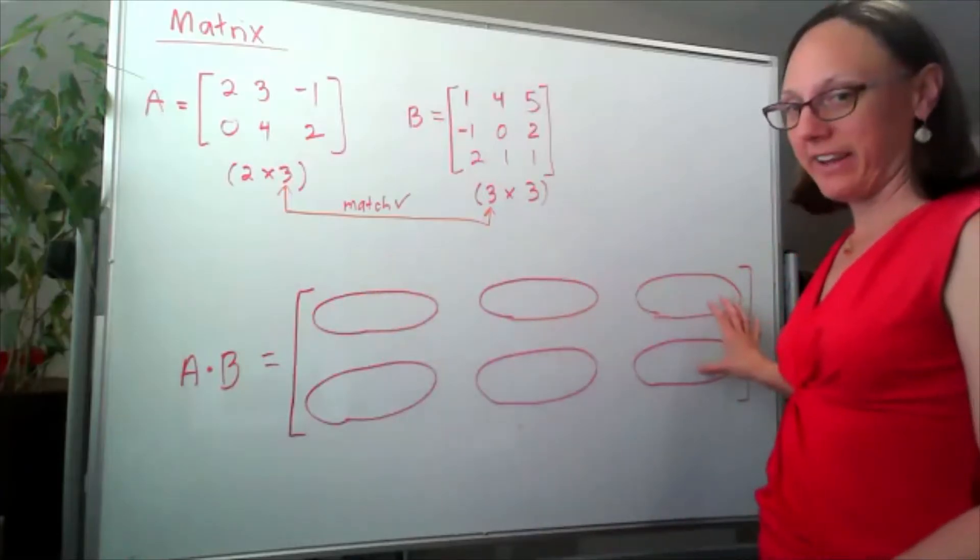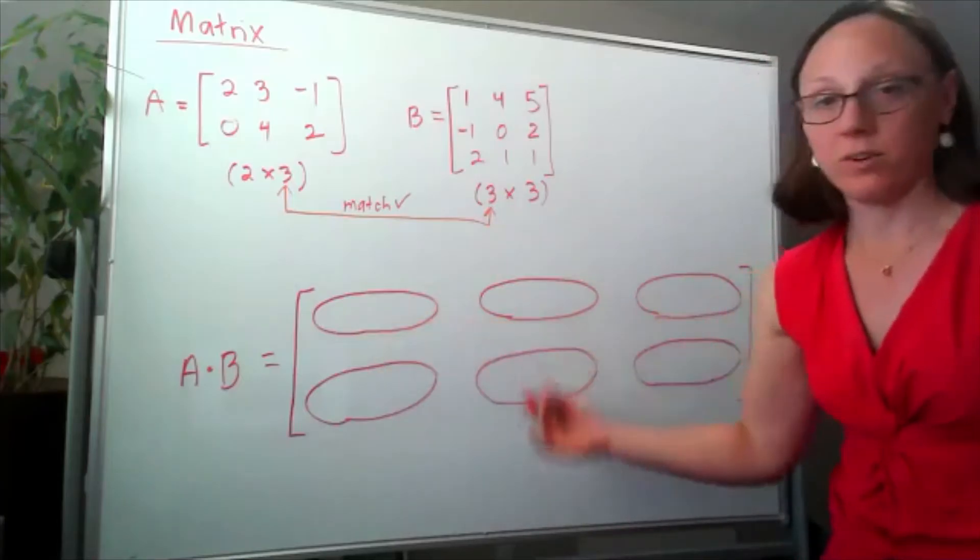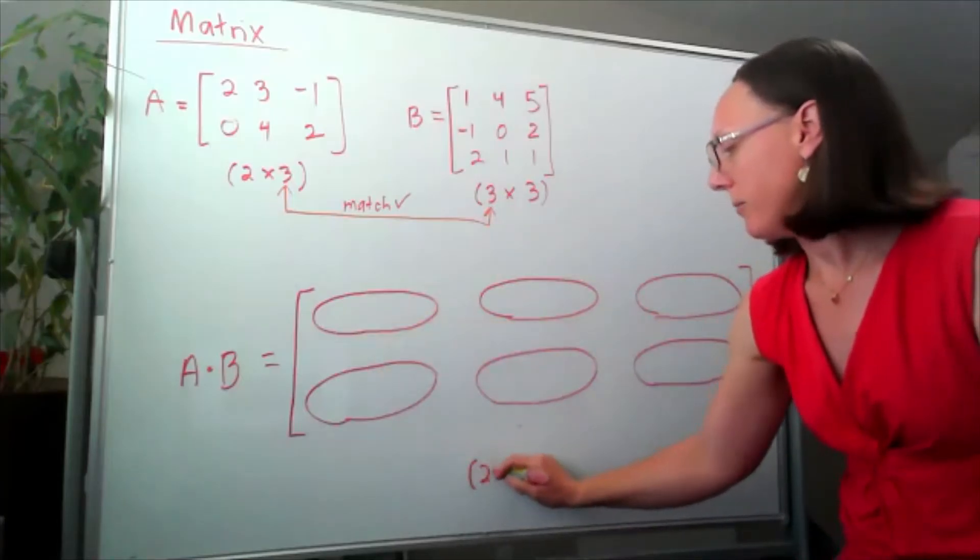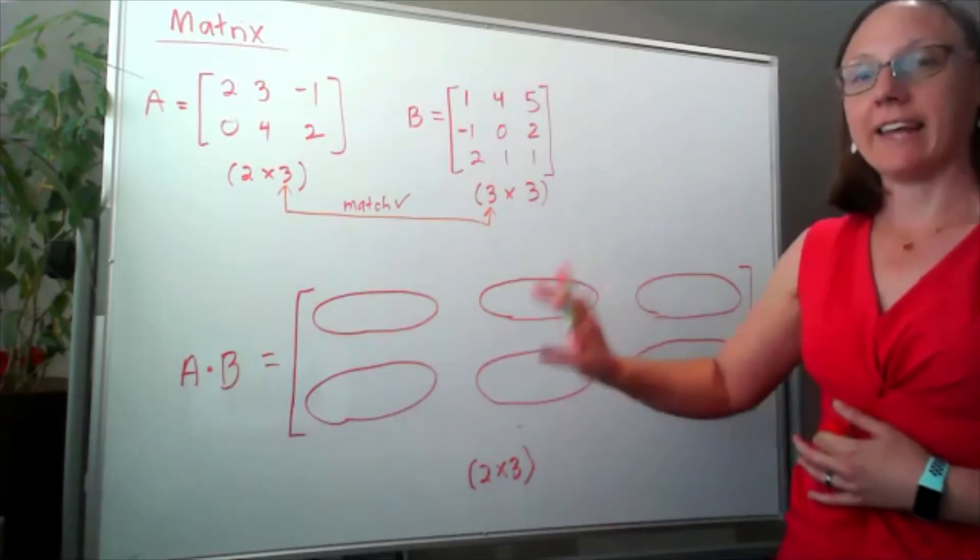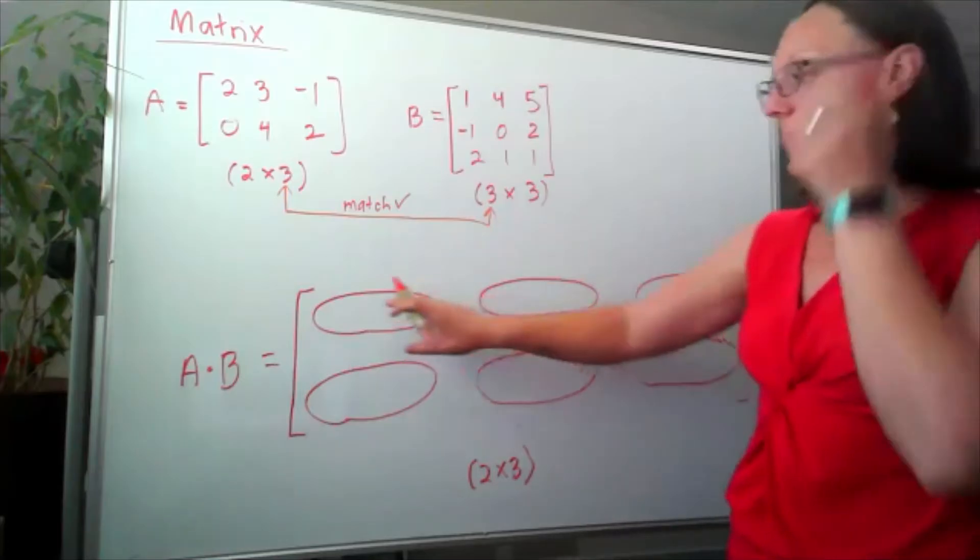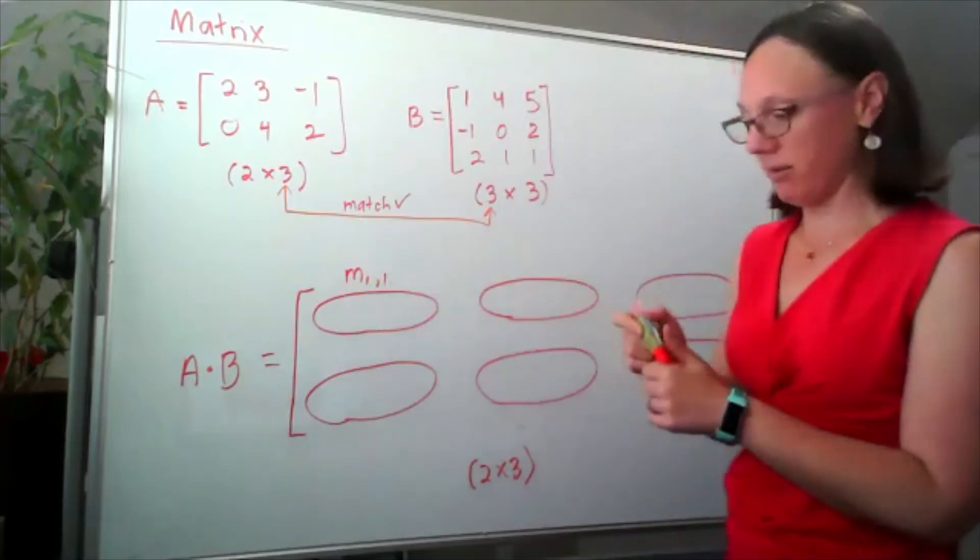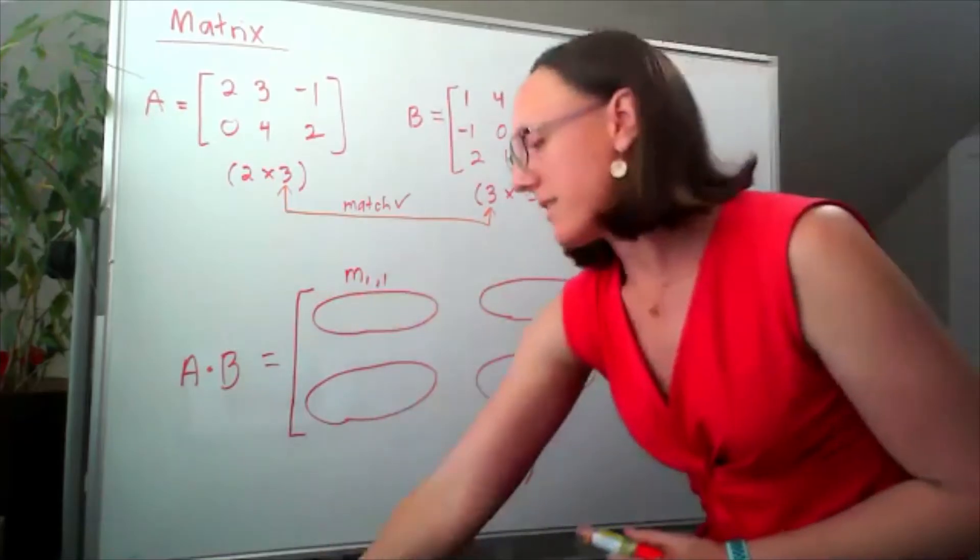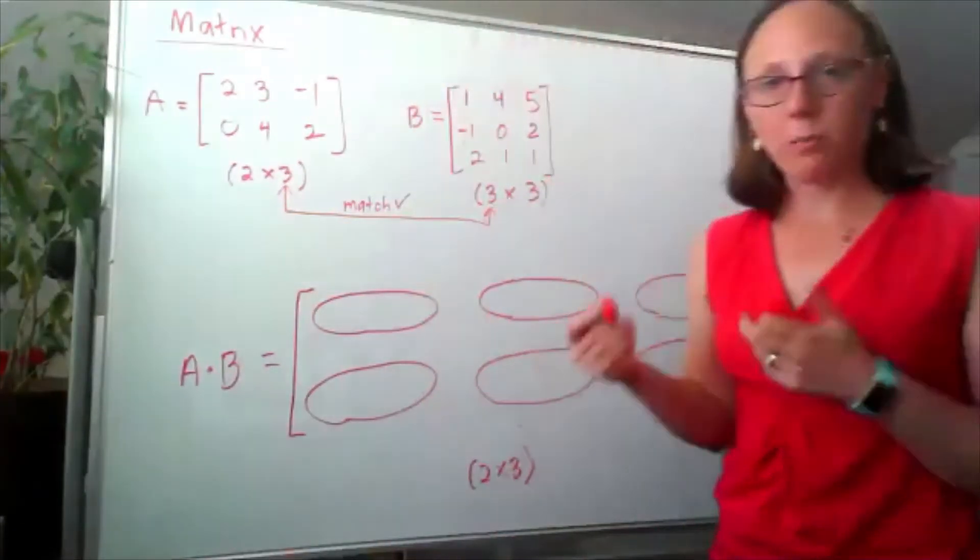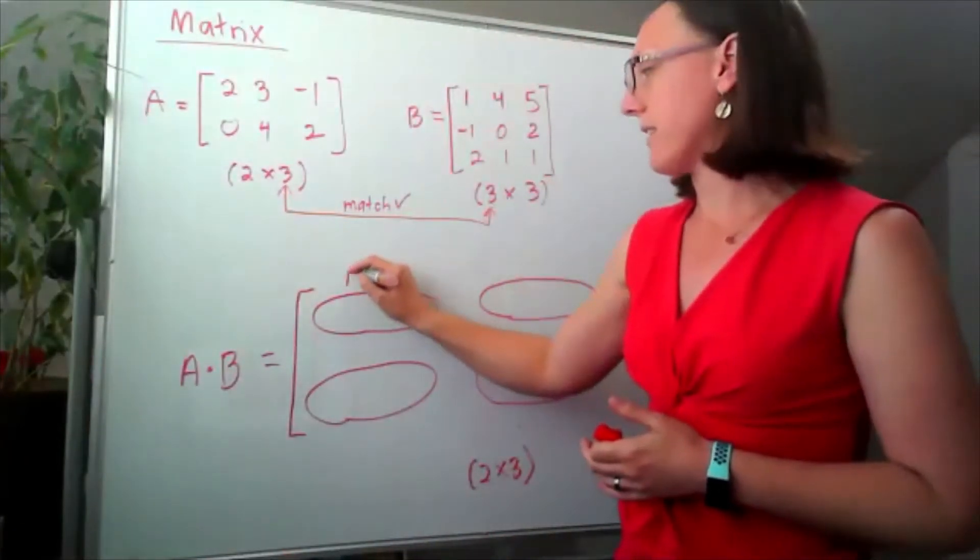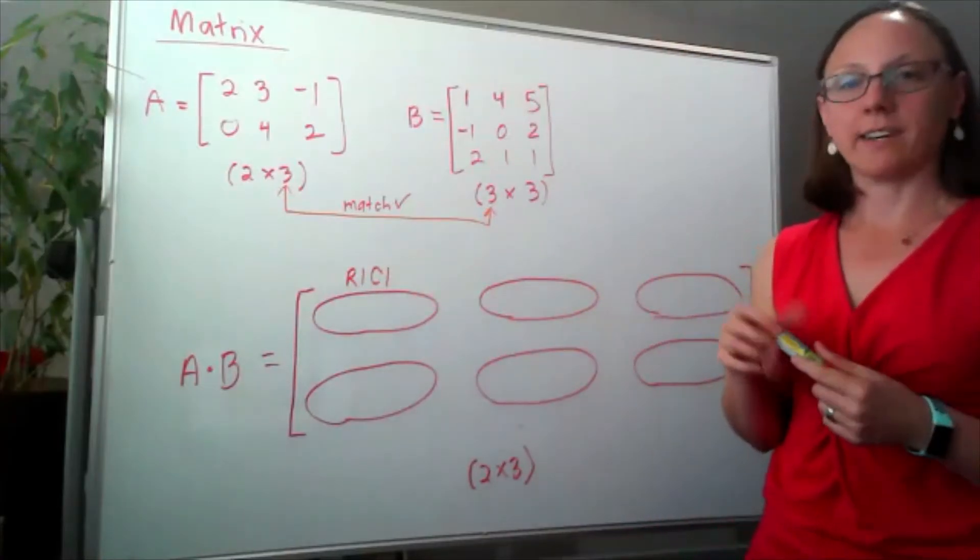So what I've laid out here are the six entries that we're going to have in our result of A times B. Here is my 2 by 3 matrix. And I'm going to go ahead and label each of these entries. So this is the first row, first column. And rather than using this notation, I'm going to be a little bit more explicit and say this is row 1, column 1. And that's a little bit more if you're used to using Excel.